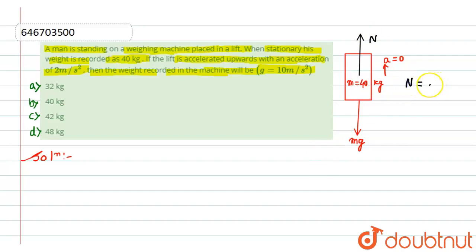Now let's suppose the second case, that is when the lift is going in upward direction with an acceleration of a equals to 2 meters per second squared.